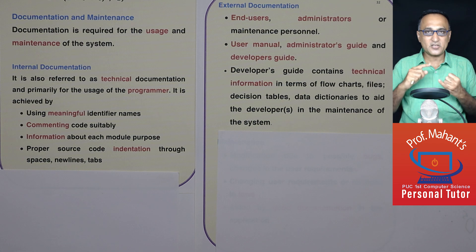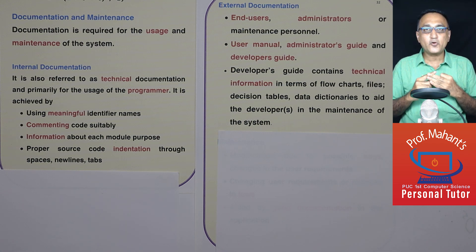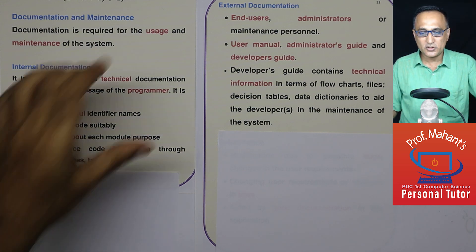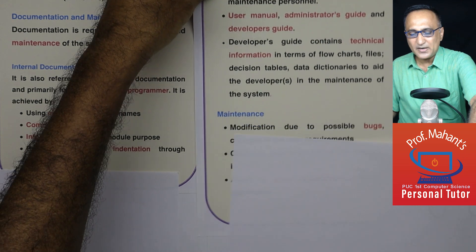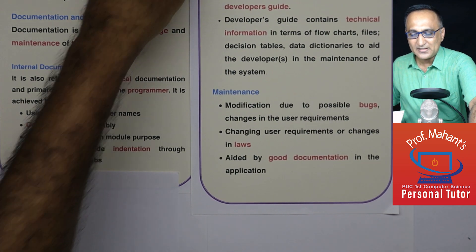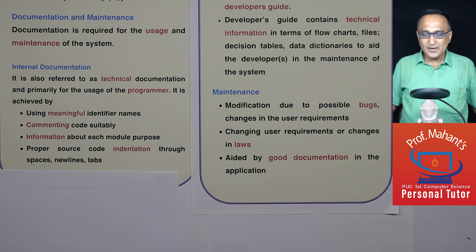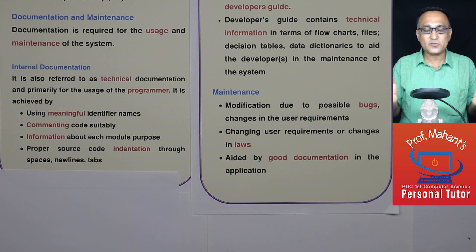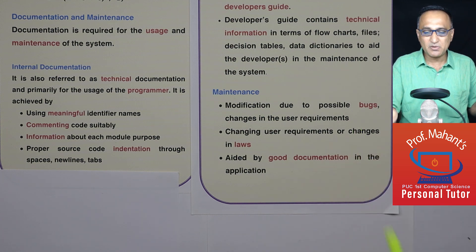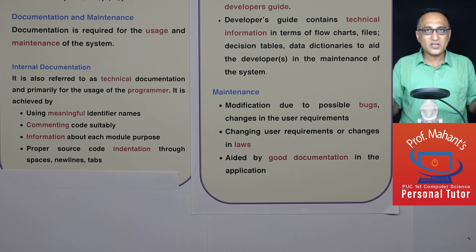So there are three types of external documentation: for end users, for administrators, and for technical people who are going to maintain the system in future. We need to maintain software because there could be bugs or errors — not all bugs may be detected at handover; after three or four months of use, bugs may be detected. Also, laws may change and the requirements of users may change, so the new technical team has to make changes to the software.